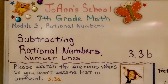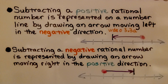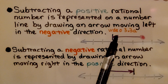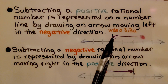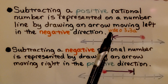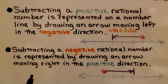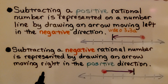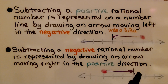3.3b, Subtracting Rational Numbers Using Number Lines. Subtracting a positive rational number is represented on a number line by drawing an arrow moving left in the negative direction — we learned that in the previous video. Now, subtracting a negative rational number is represented by drawing an arrow moving in the positive direction, to the right.